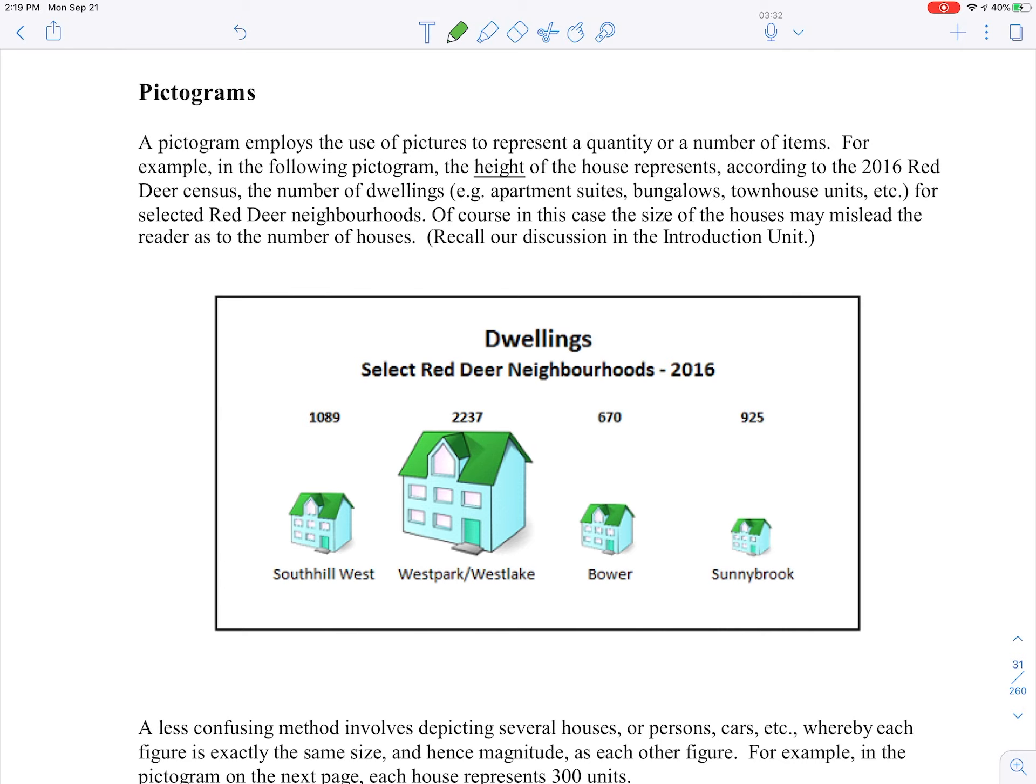In this particular one we're talking about the number of dwellings in select Red Deer neighborhoods from the 2016 census. In our case we're only interested in the height of the building or the little house here. You can see they all have a baseline. They all start at the same point, but the West Park ones are about twice as high as the Southill West ones. The problem is that a pictogram is really a two-dimensional representation of a 3D object, and we're only interested in measuring one dimension. You'd think you could probably put about six of those Southill West houses inside of the West Park ones, and yet we're really only interested in measuring the height.